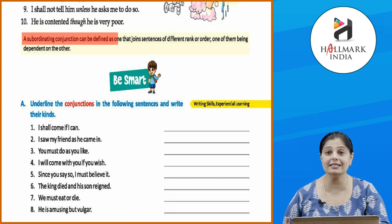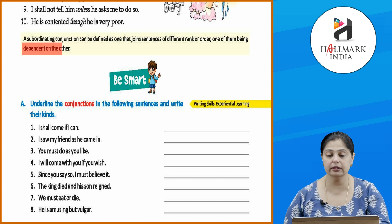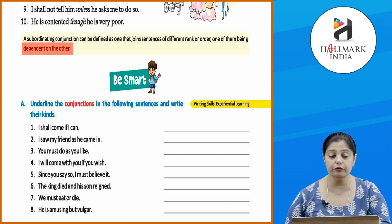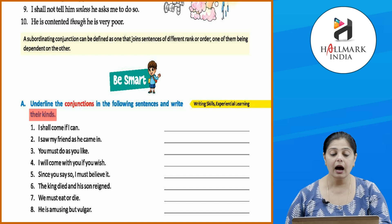A subordinating conjunction joins sentences of different rank or order, one being dependent on the other. That's why we join them with words like: unless, if, what, when, where, that, because. Now let's be smart — underline the conjunctions in the following sentences and write their kinds.